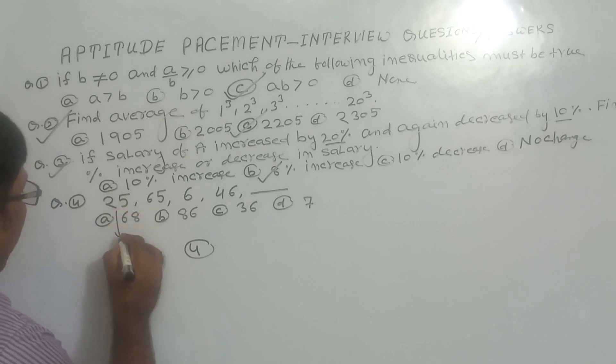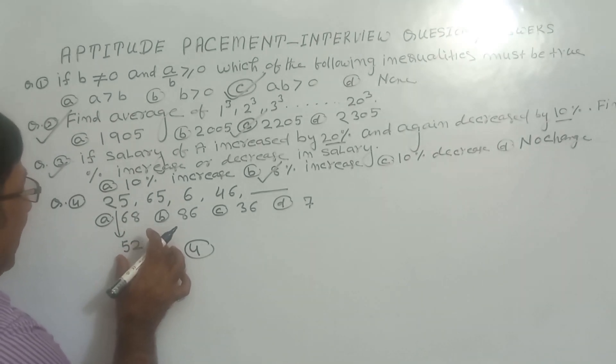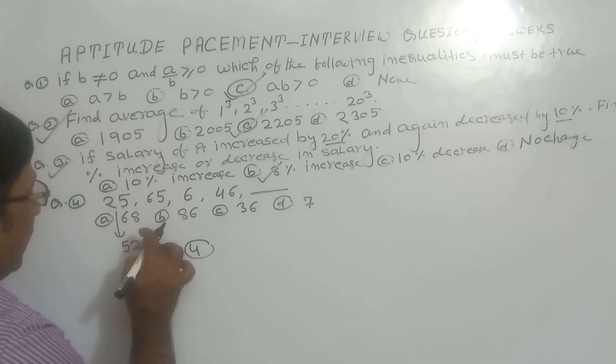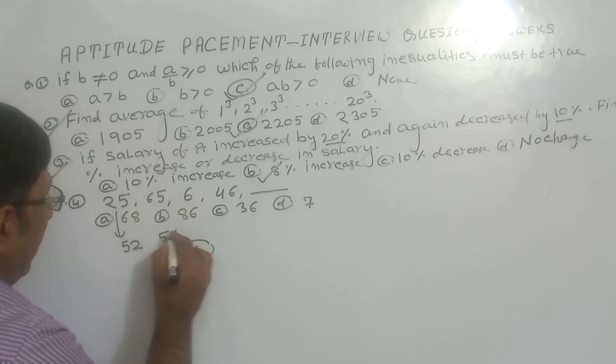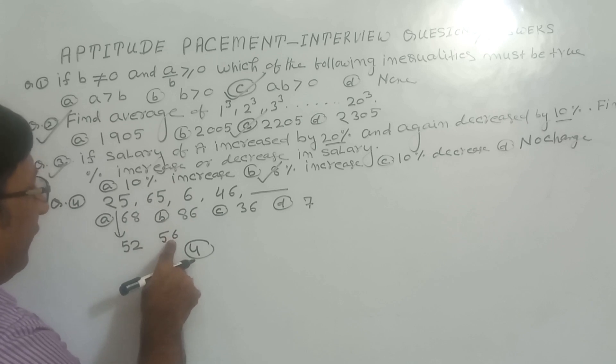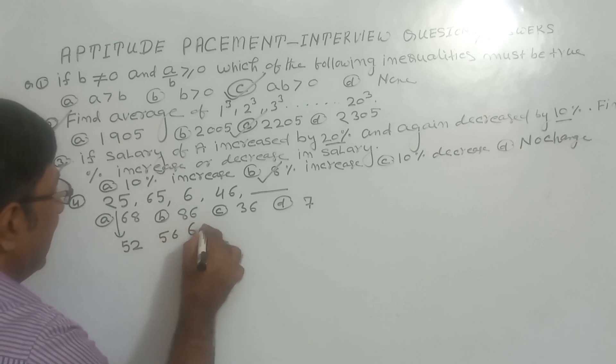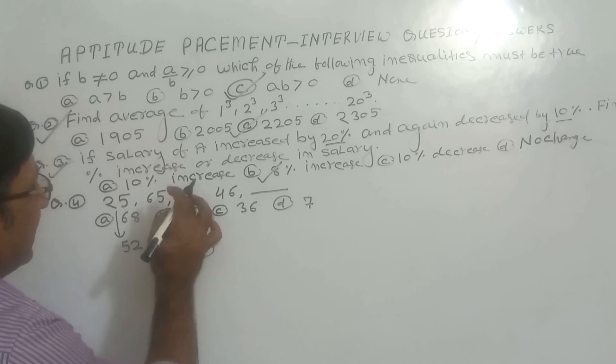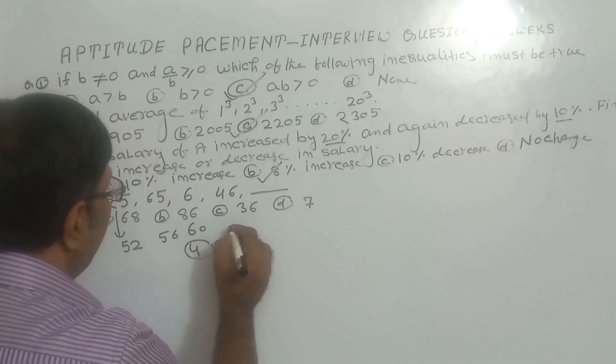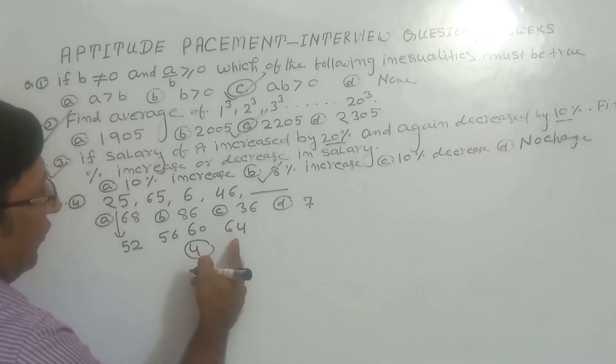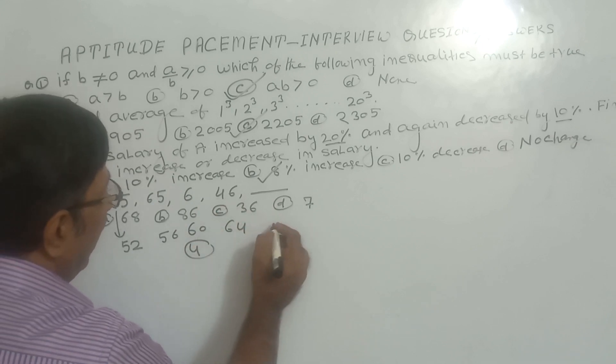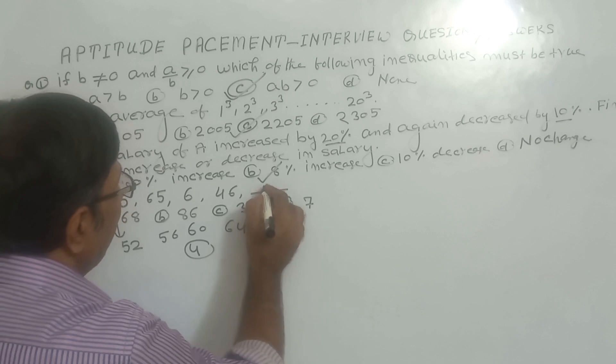Here the logic is: suppose this is 25, when we reverse this it becomes 52. Now when we add 4, we get 56. This number becomes reversed to 65. Again 56 plus 4 is 60, reverse is 6. Again 60 plus 4 is 64, reverse is 46. So again 64 plus 4 will be 68, so reverse will be 86. So our correct answer will be 86.